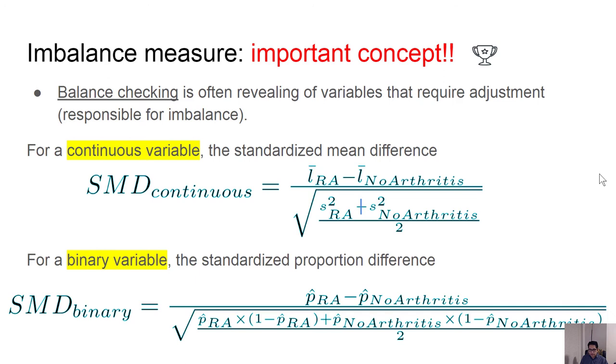That can be useful in determining such imbalance. One of those is, if you are dealing with the continuous variable, you can use the standardized mean difference, which is basically the mean of the rheumatoid arthritis group divided by the corresponding variances and their pooled variances.